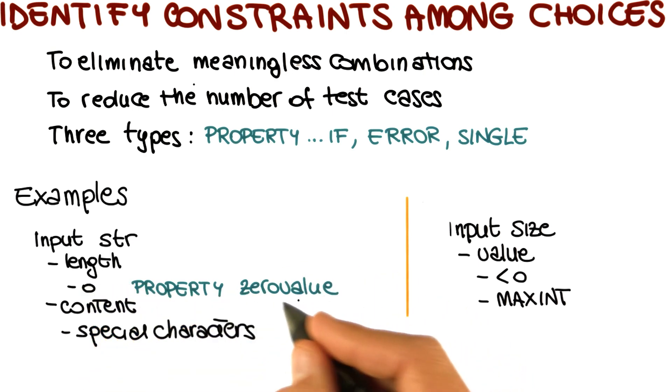At this point, we can use this to exclude some meaningless combinations. For instance, consider special characters. If we have a string of length zero, which means a string with no characters, obviously there cannot be special characters. Considering this combination would just be a waste of time. So what we do is specify next to this choice that we only consider this if length is